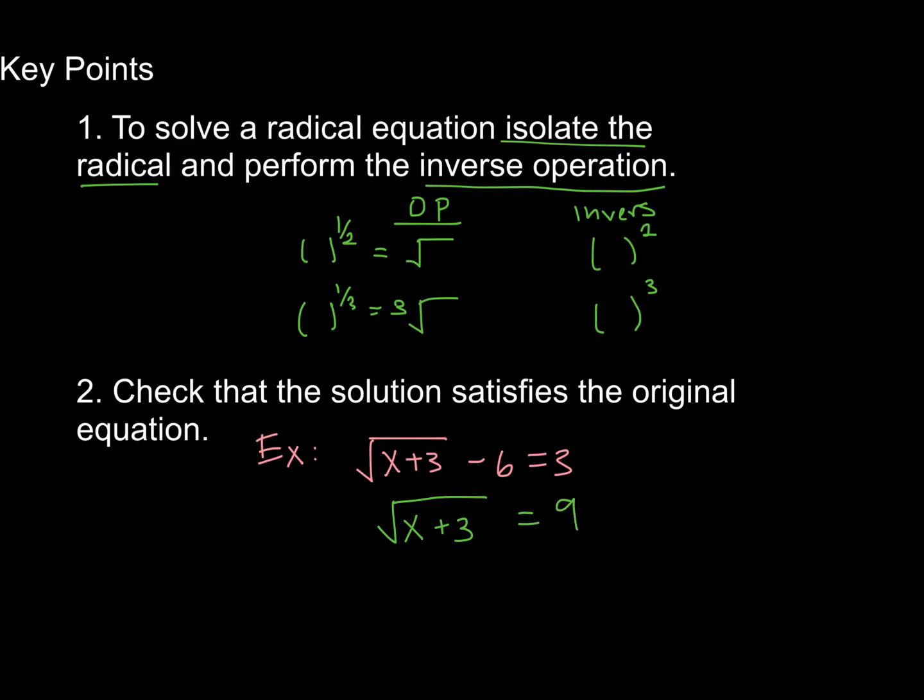And now I can square both sides since the operation here is square rooting. I can square, that's the inverse. And I'll be left with x plus 3 is equal to 81. And now simply subtracting 3 from both sides will leave me with x equals 78. And that is the solution.